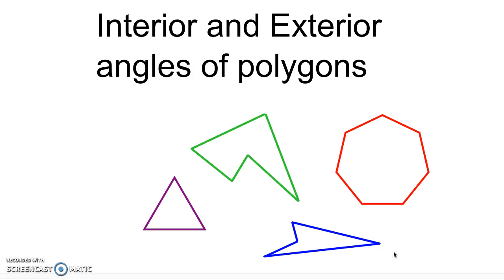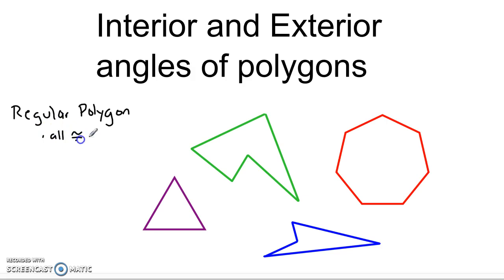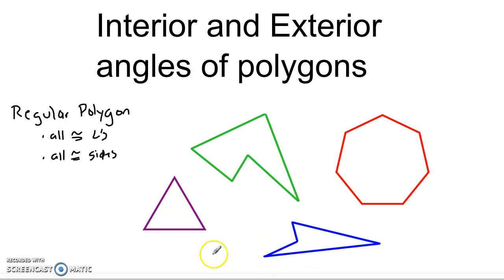Just a couple of things before we get started. I'm not really going to be talking about all polygons today — I'm going to be focusing on two categories. One thing we'll talk a lot about are what are known as regular polygons. Regular polygons are polygons with all congruent angles and all congruent sides. Some polygons shown here would be regular, and some are irregular. Most of what we're going to be talking about focuses on regular polygons.